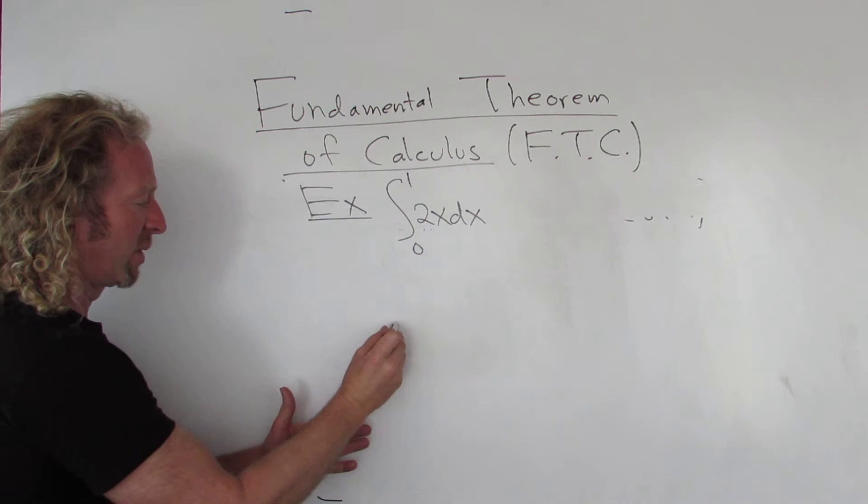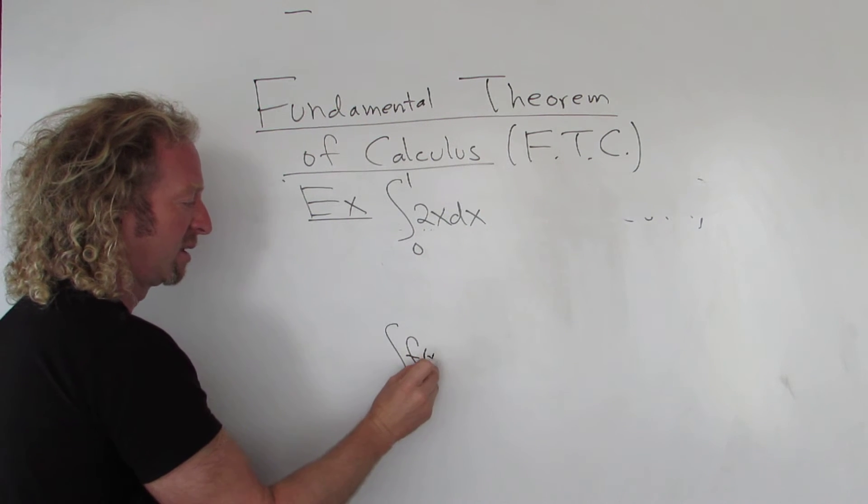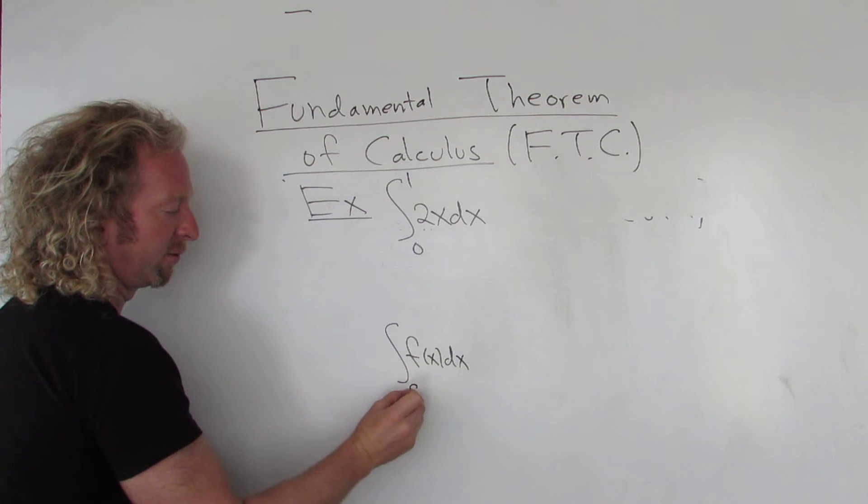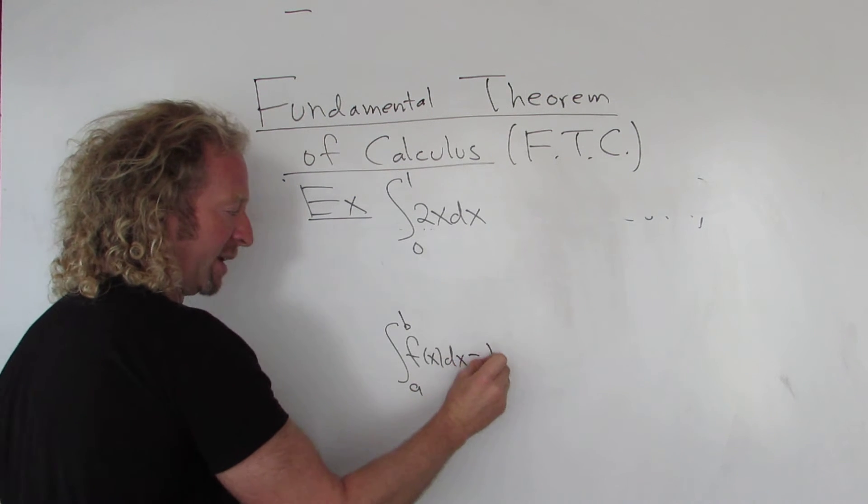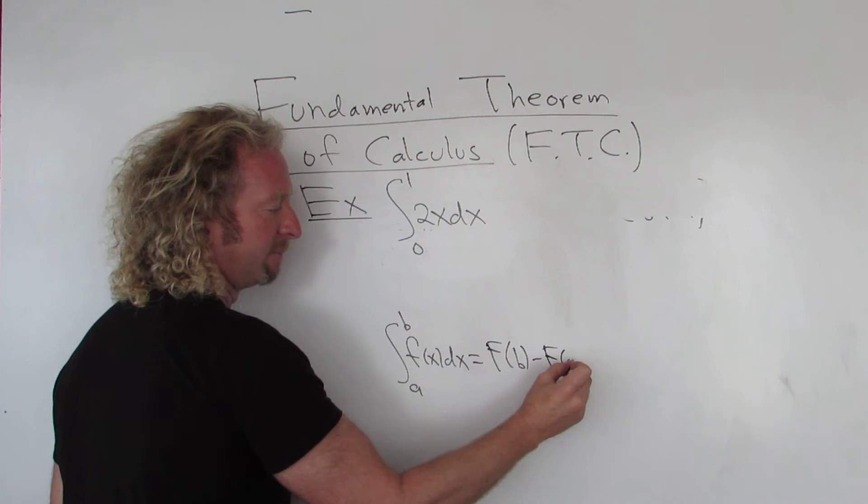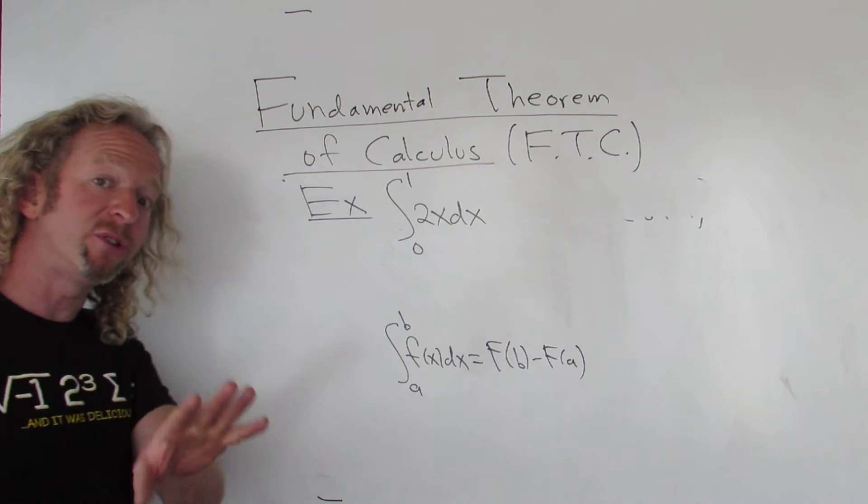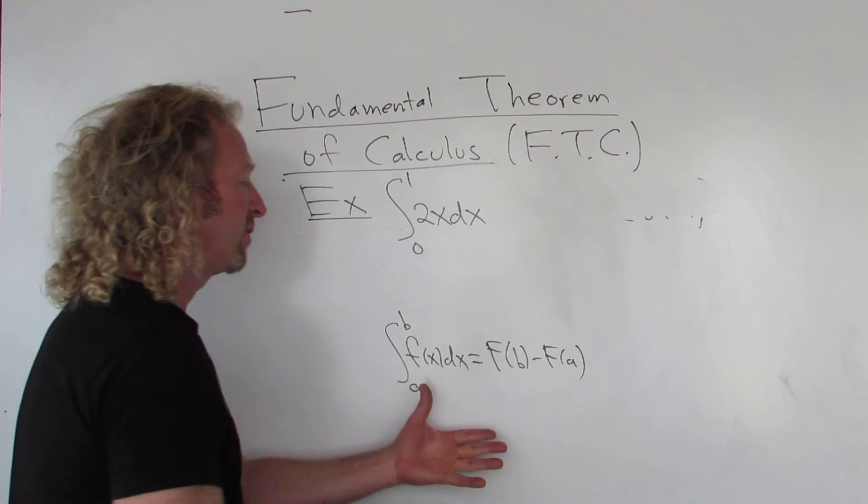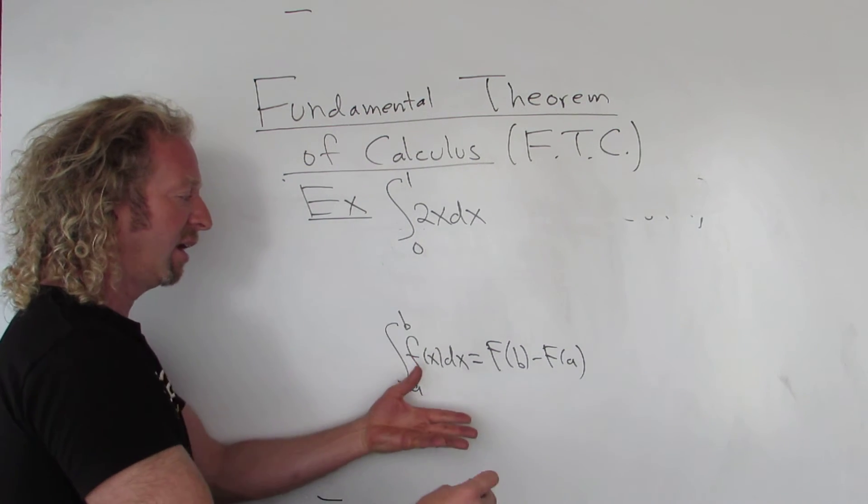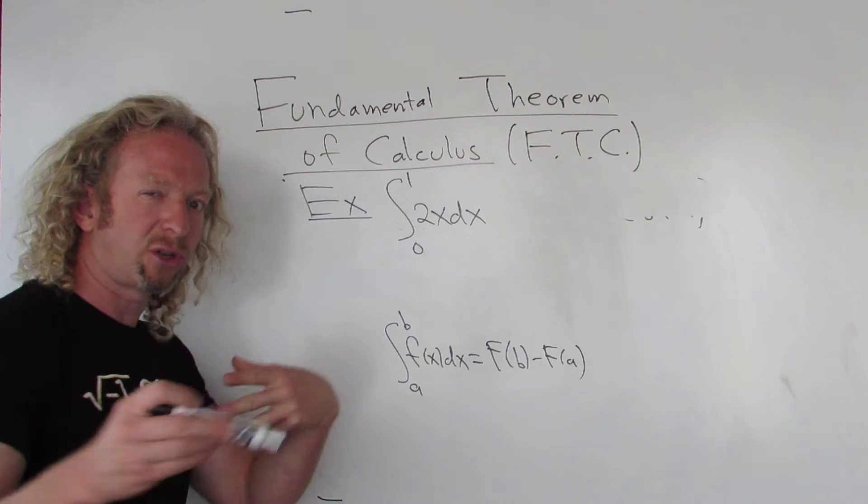So if you want to use the formula, which I'll write down here, the formula says that the definite integral from a to b is equal to big F of b minus big F of a. You can identify your little f. And this is not how people do it, by the way. I'm just going to go through it first and show you how to use the formula carefully and then I'll show you how people do it.